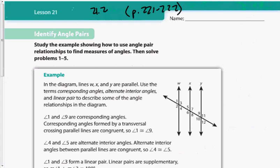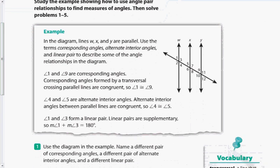In today's homework it says to use the example diagram and answer questions using corresponding angles, alternate interior angles, and linear pair. Angles 1 and 9 are corresponding — same spot, different intersections, congruent because the lines are parallel. Angles 4 and 5 are alternate interior — on opposite sides of the transversal, interior of the parallel lines, congruent. And a linear pair example is angles 1 and 3, because they're right next to each other and make a line, adding up to 180 degrees.